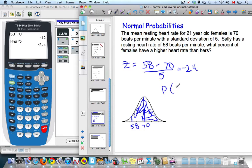So if I want the probability that the heart rate is bigger than 58, I'm going to go to normal CDF on my calculator.